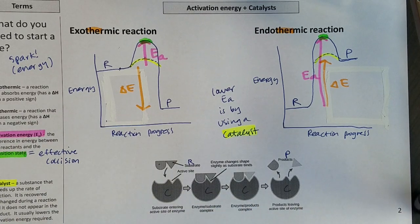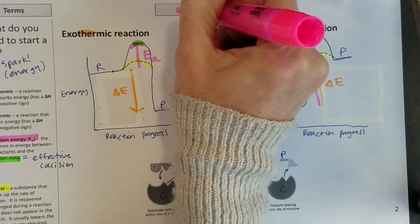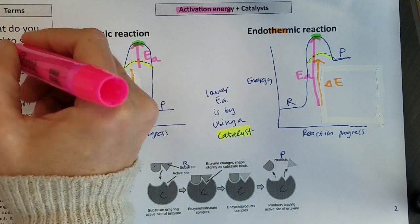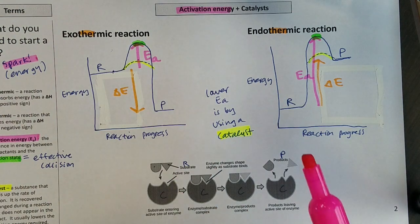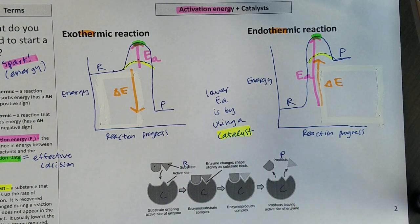So that is a glimpse at activation energy, which was that energy from reactants to the transition state. It's that spark that you need before you start a fire. And then a way to lower that activation energy is to use a catalyst.